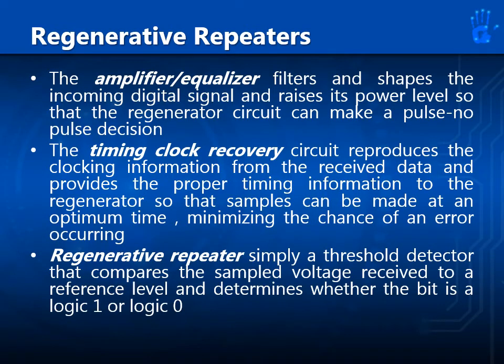In summary, the amplifier-equalizer filters, shapes, and raises the power level of the incoming digital signal so the regenerator can make a pulse/no-pulse decision. The timing clock recovery circuit reproduces clocking information from the received data and provides proper timing to the regenerator so samples are made at an optimum time, minimizing errors. The regenerative repeater is simply a threshold detector that compares the sampled voltage to a reference level and determines whether the bit is a logic 1 or logic 0.